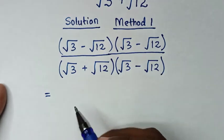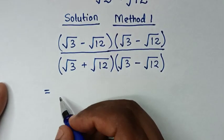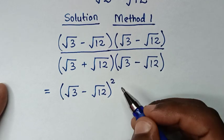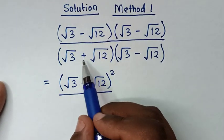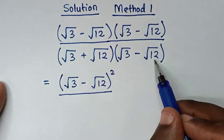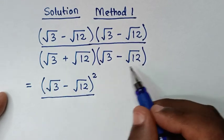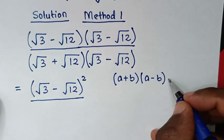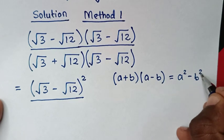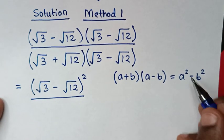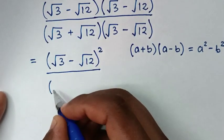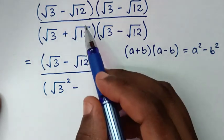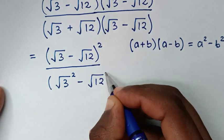In the next step, the numerator becomes square root of 3 minus square root of 12, all squared. In the denominator, we have a positive and a negative term, so this is in the form of A plus B times A minus B, which equals A squared minus B squared. Applying this form: A squared is square root of 3 squared, minus B squared which is square root of 12 squared.